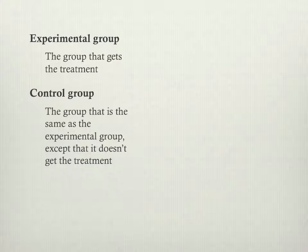If the groups are different in other ways, that's a serious problem. For example, suppose that in addition to the one group getting a vegetarian diet, we also happen to grab younger people for that group. Now we have young people getting a vegetarian diet and older people getting some other kind of diet.